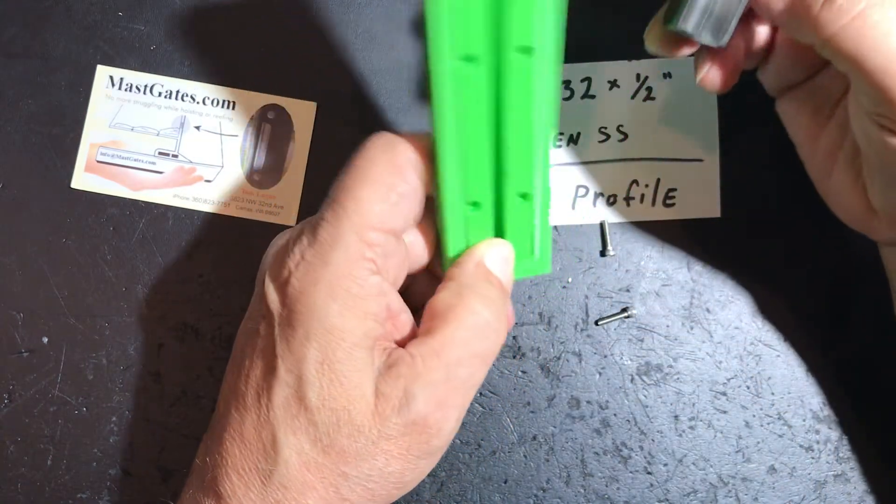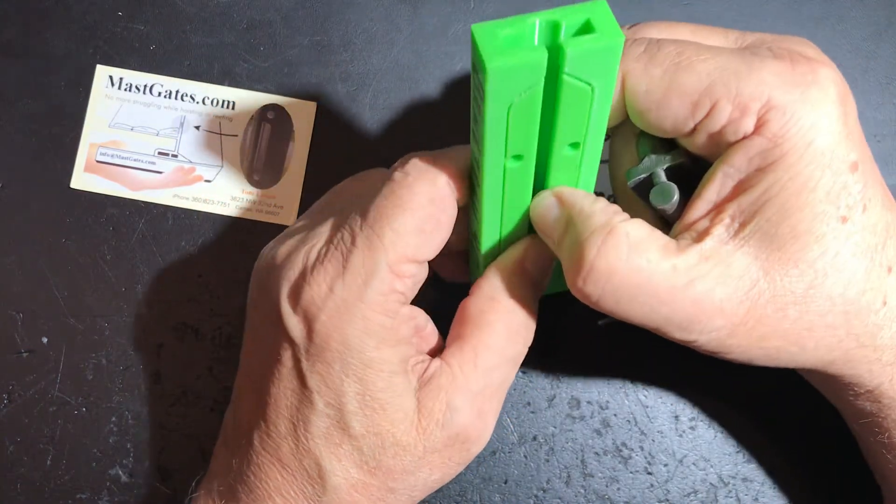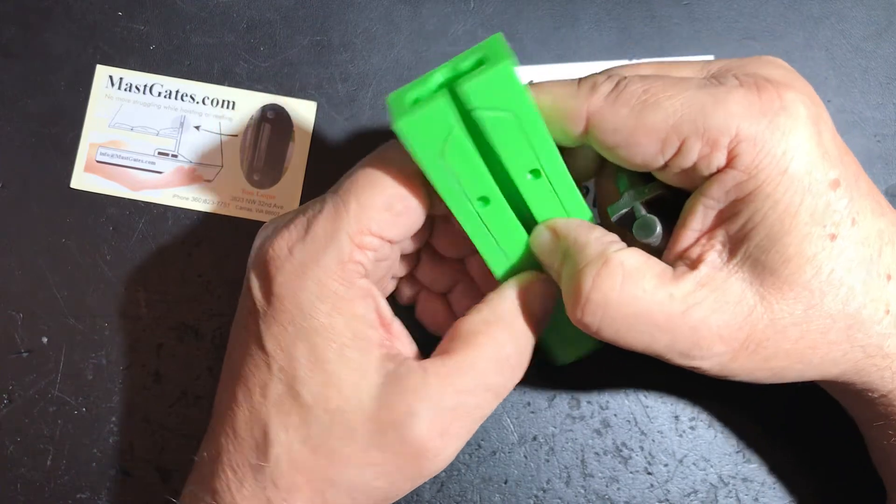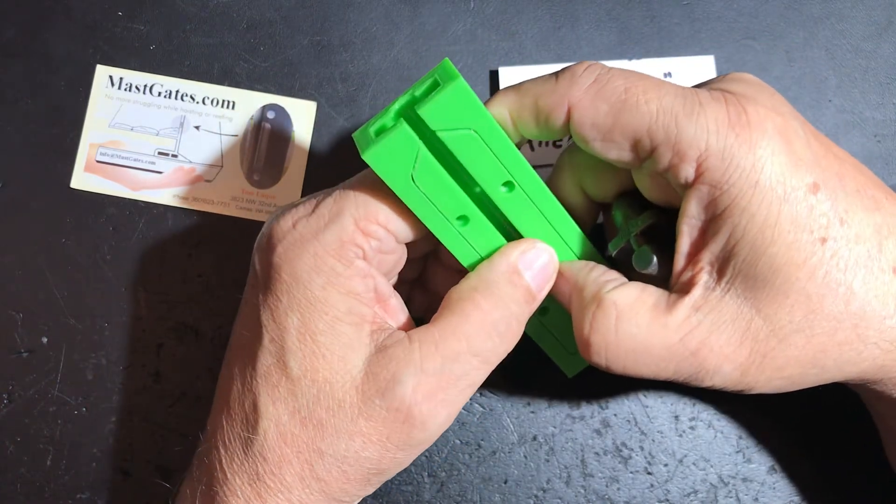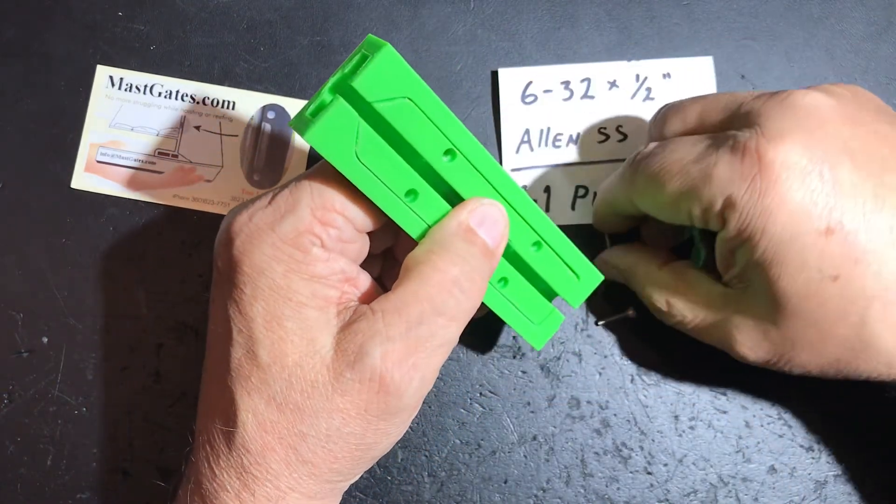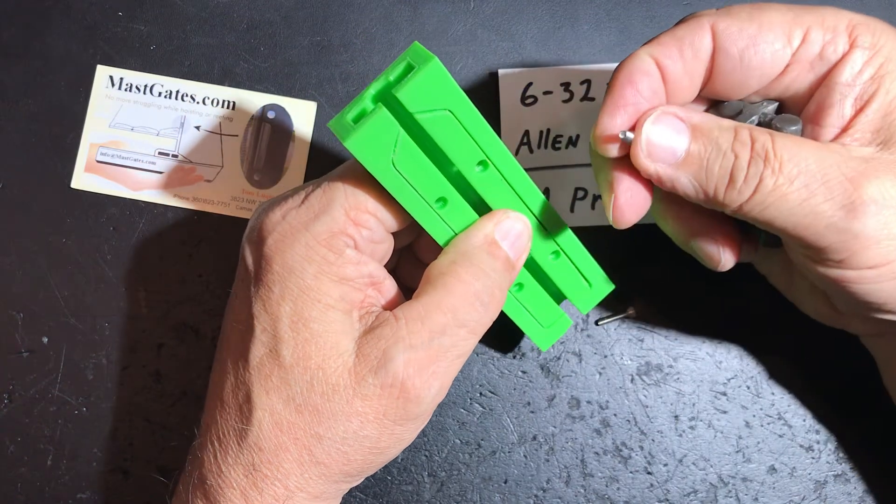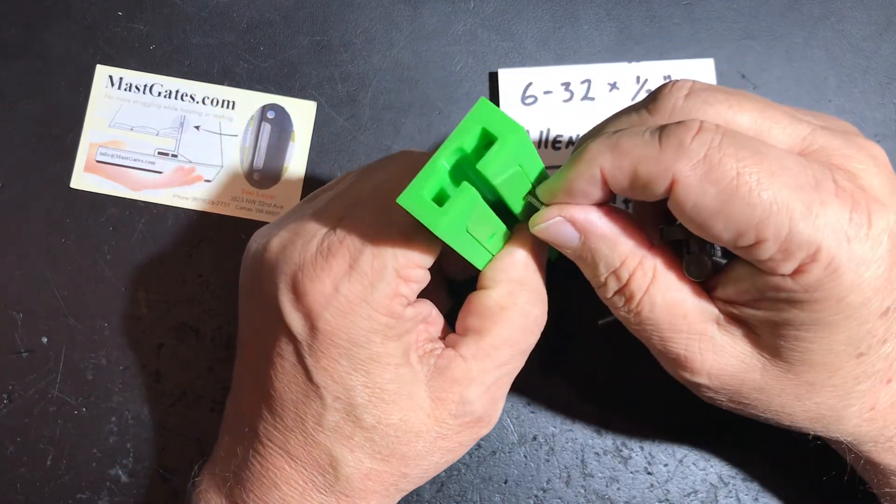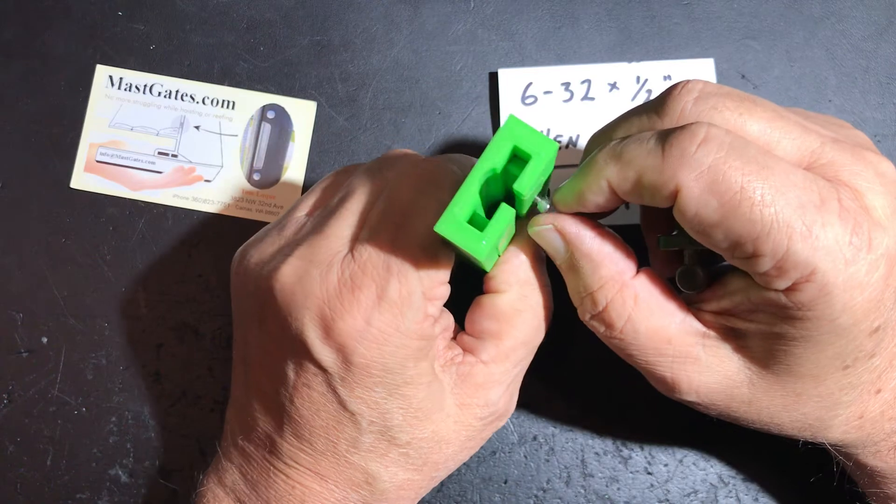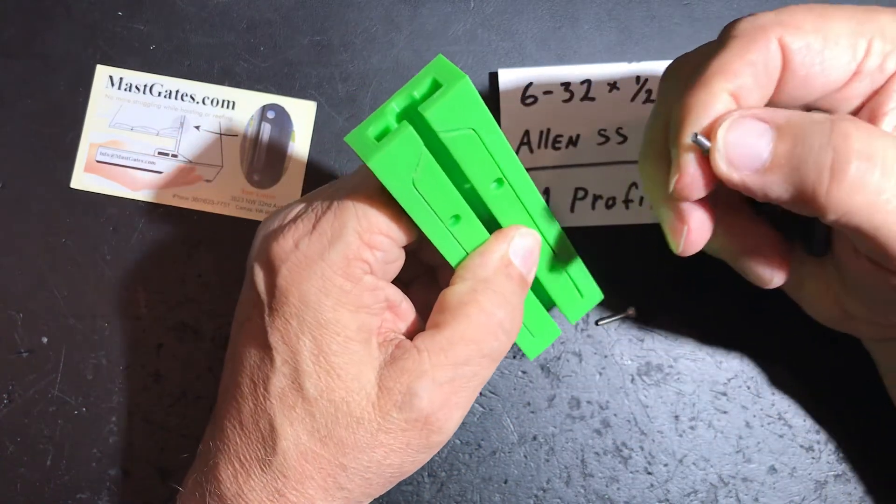Thank you for viewing MastGates.com G1 profile install. Remember to use a marine grade anti-seize paste on your threads so you won't have any galvanic action taking place and seizing up your screws.